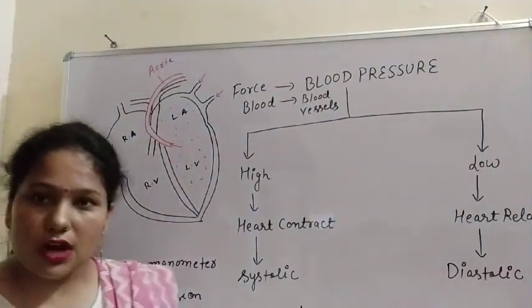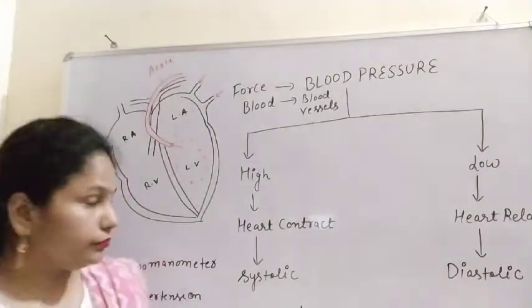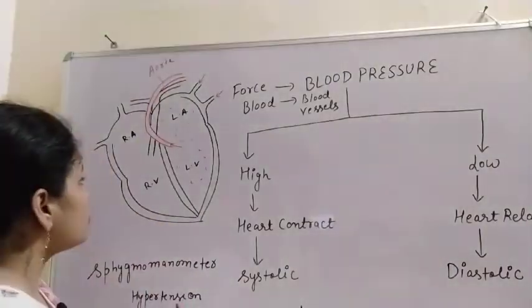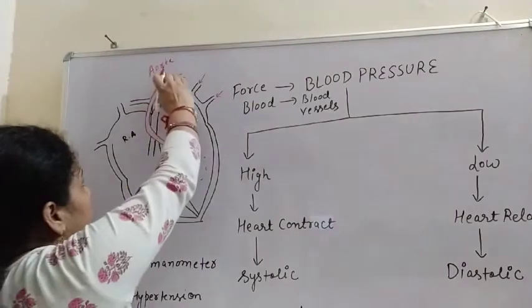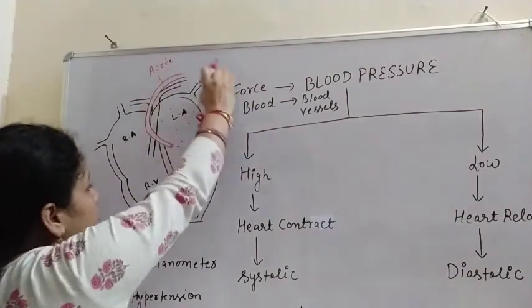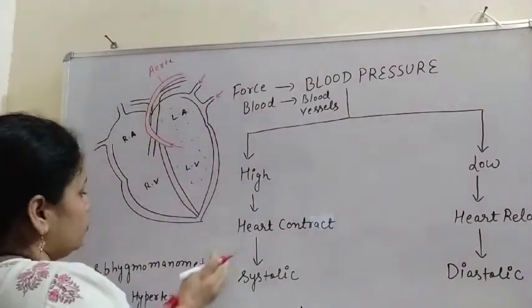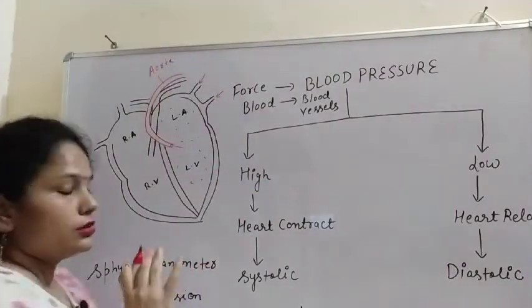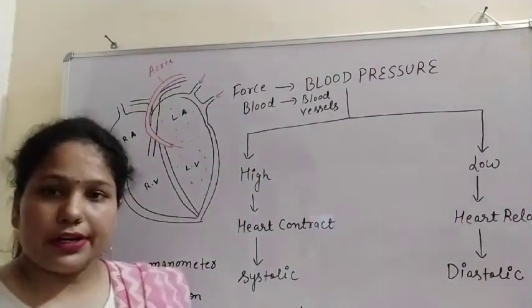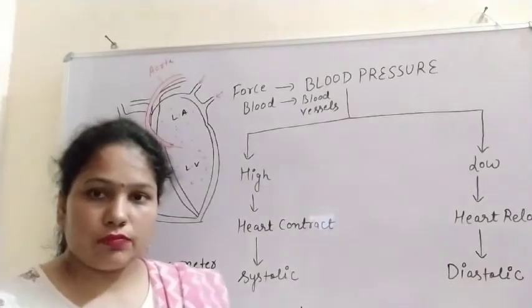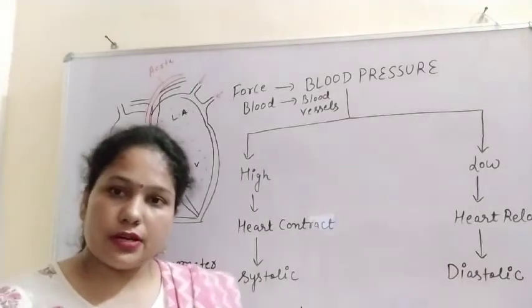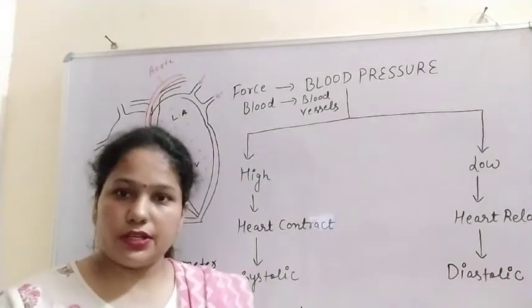The aorta is the largest artery. So blood is supplied to the aorta, and the aorta supplies the blood to the different body parts. So here, pressure is there.